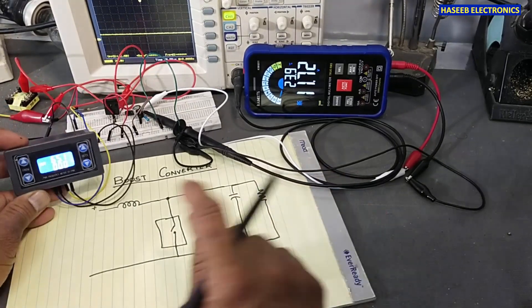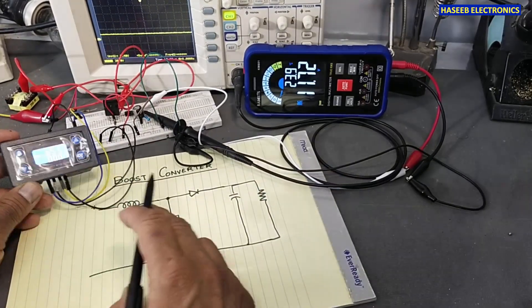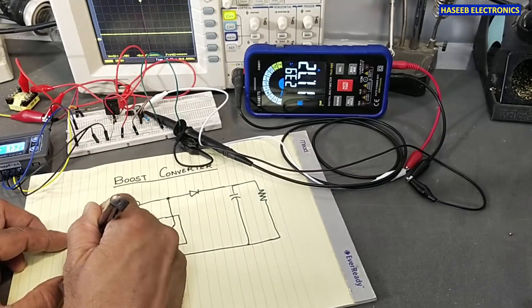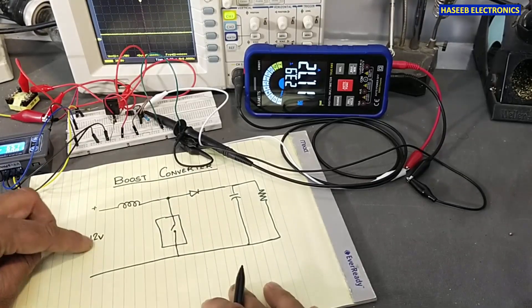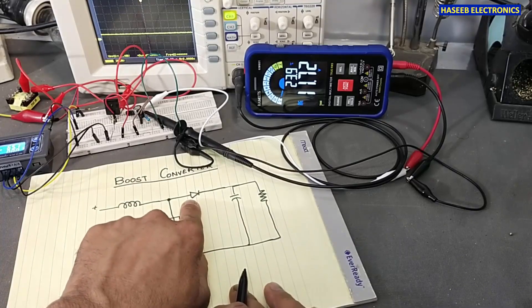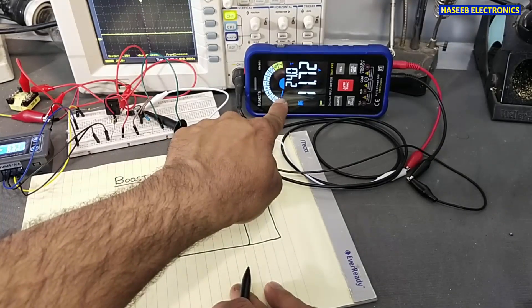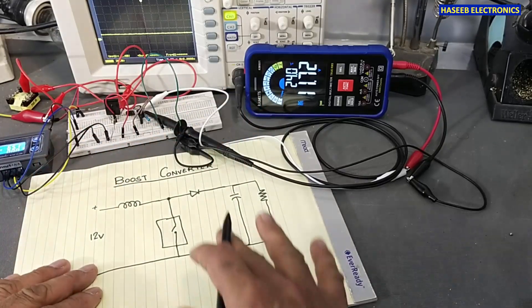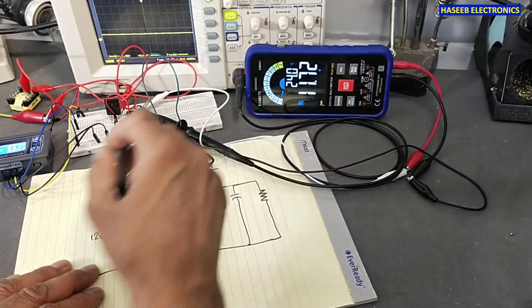When we have zero percent duty cycle, at that time we will receive - I am providing 12 volts - 12 volts minus diode drop voltage, forward voltage for this diode. 11.72 volts we are receiving in the output and across the load, across this capacitor.